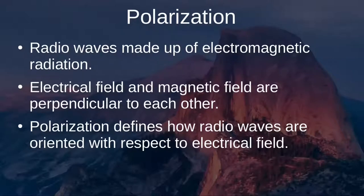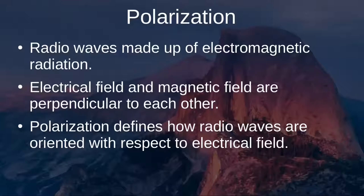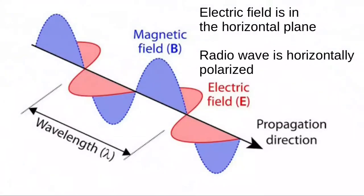Polarization tells us the orientation of the RF signal. Radio waves are made up of both electric and magnetic radiation — electromagnetic radiation. The electric field and magnetic field are oriented perpendicular to each other, or 90 degrees with respect to each other. Polarization defines how the radio waves are oriented with respect to the electric field, not the magnetic field. Looking at a diagram, if the electric field is oriented parallel to the horizon, the radio wave is horizontally polarized.